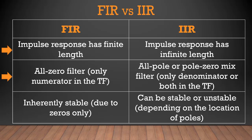The second difference is related with the transfer function of the filter. In case of FIR filter, the transfer function contains only a numerator, which means that there are no poles in FIR filter. So we can say that FIR filter is always an all-zero filter. Whereas in case of IIR filter, the transfer function can contain both the numerator and denominator, or it can only contain denominator. If it only contains denominator, the IIR filter is an all-pole filter. If the transfer function contains both numerator and denominator, then the IIR filter is a pole-zero mix filter.